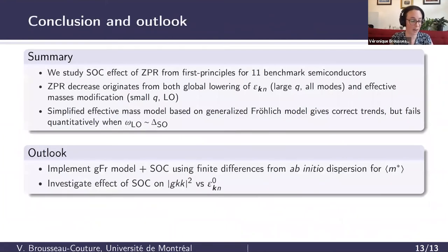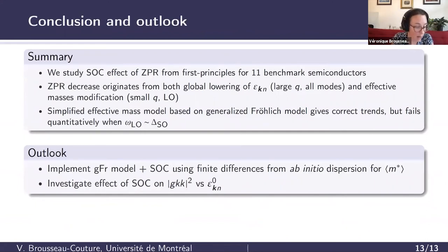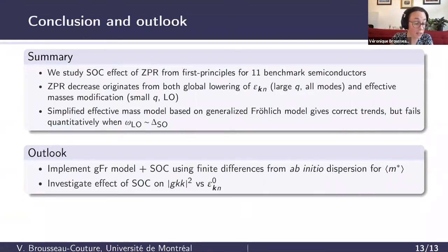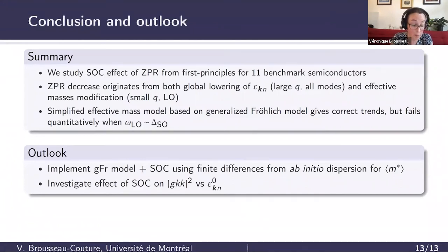In summary, we have investigated the effect of spin-orbit interaction on the ZPR for 11 benchmark semiconductors. Our first-principles results show that the ZPR reduction originates from the LO mode at small q and from almost all modes at large q. Our generalized Fröhlich model with spin-orbit interaction captures the correct trend but fails to be predictive when spin-orbit coupling is weak.